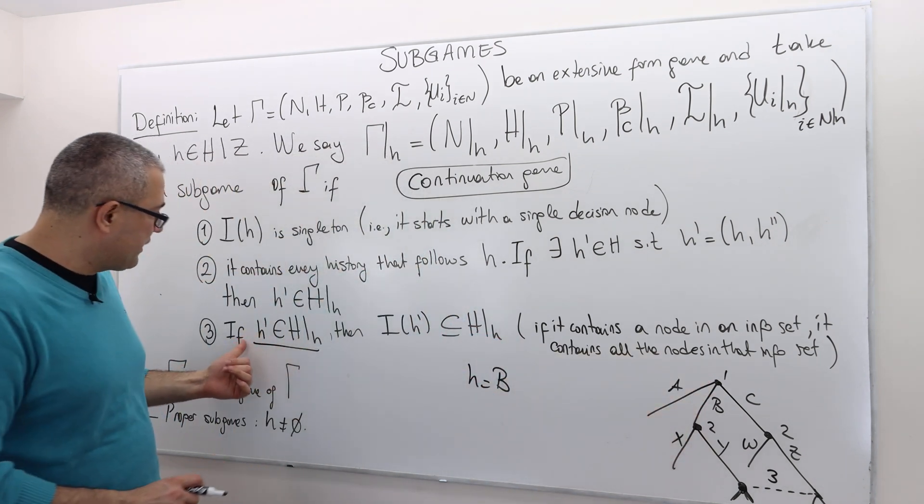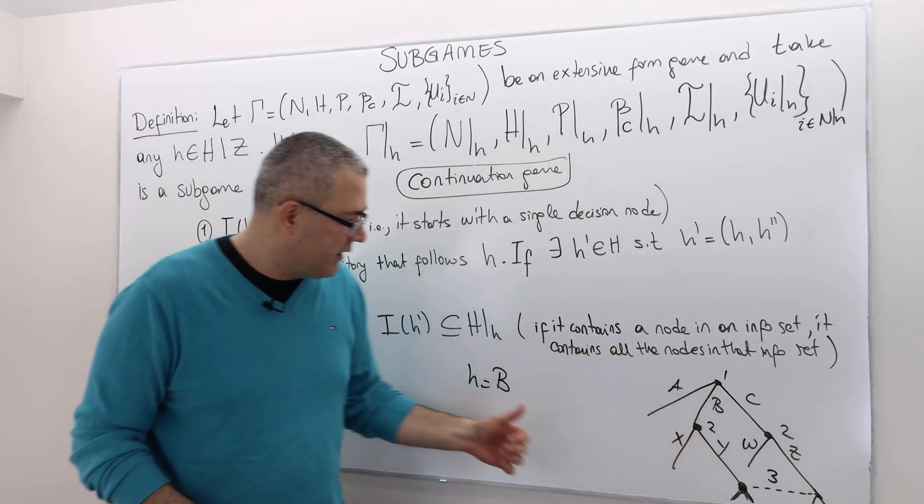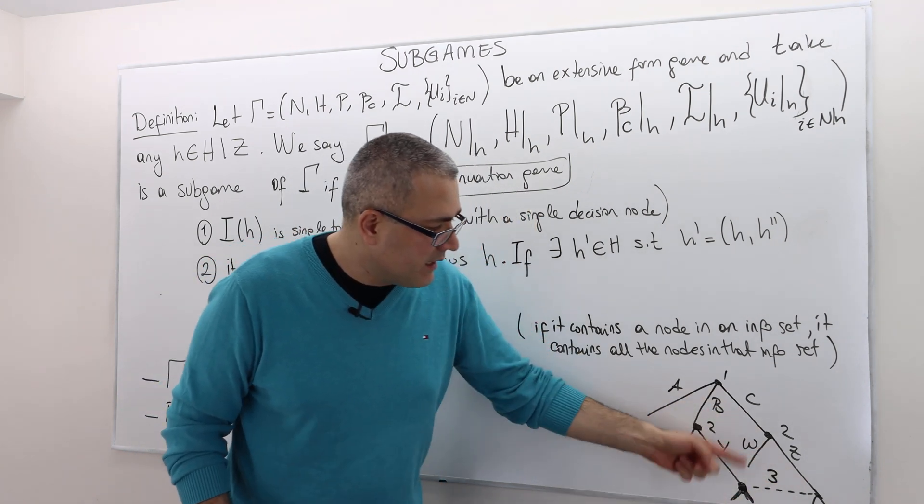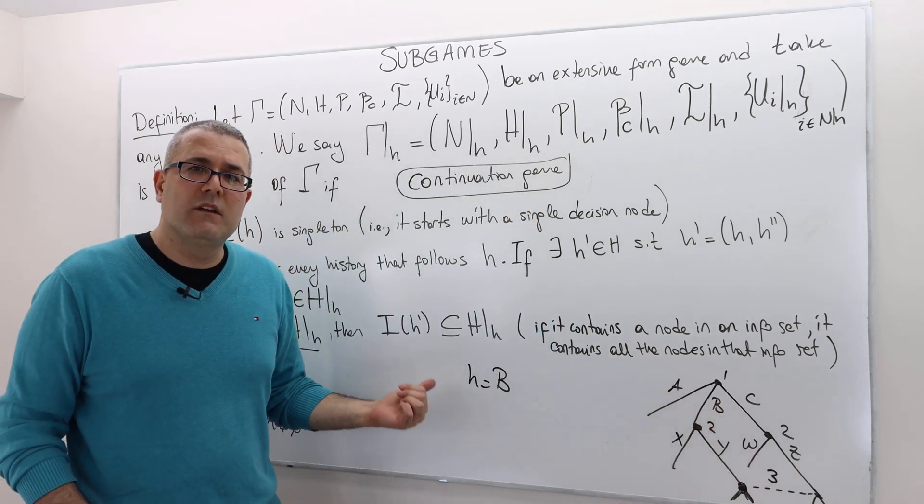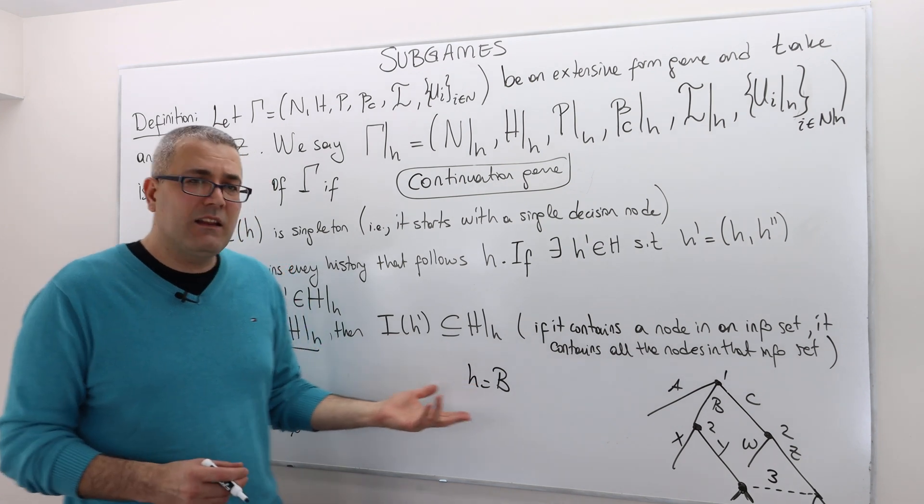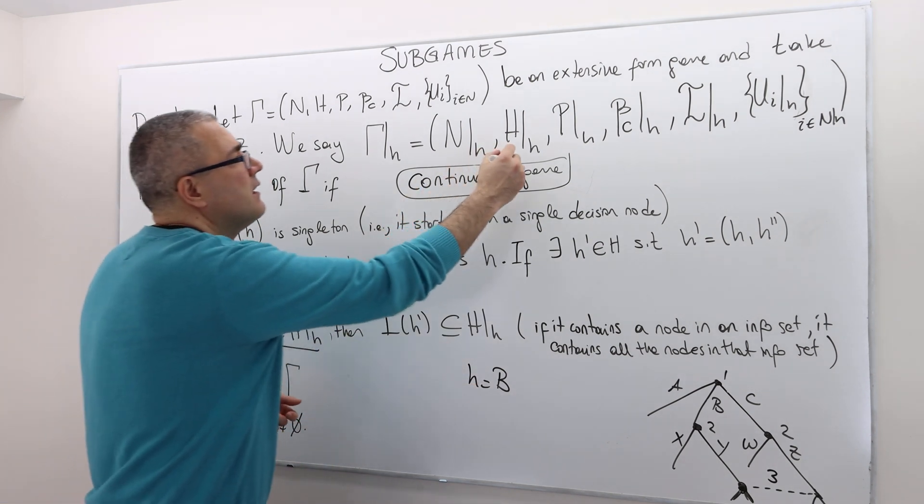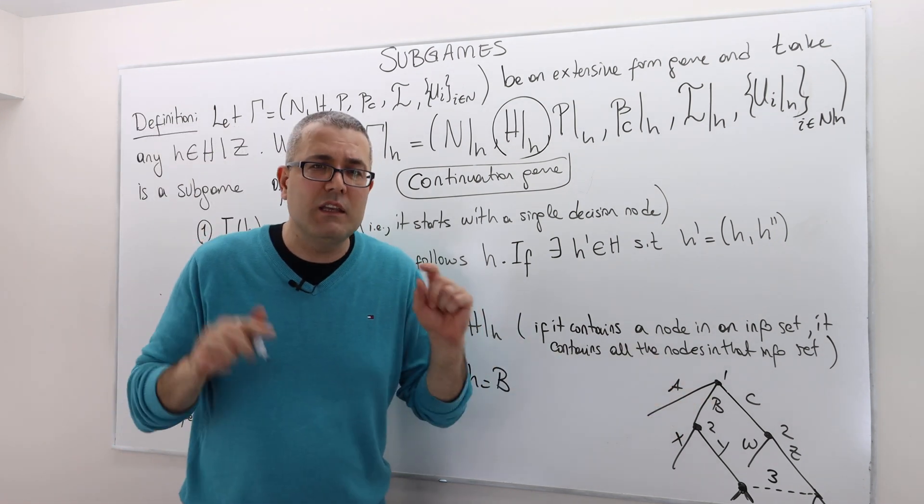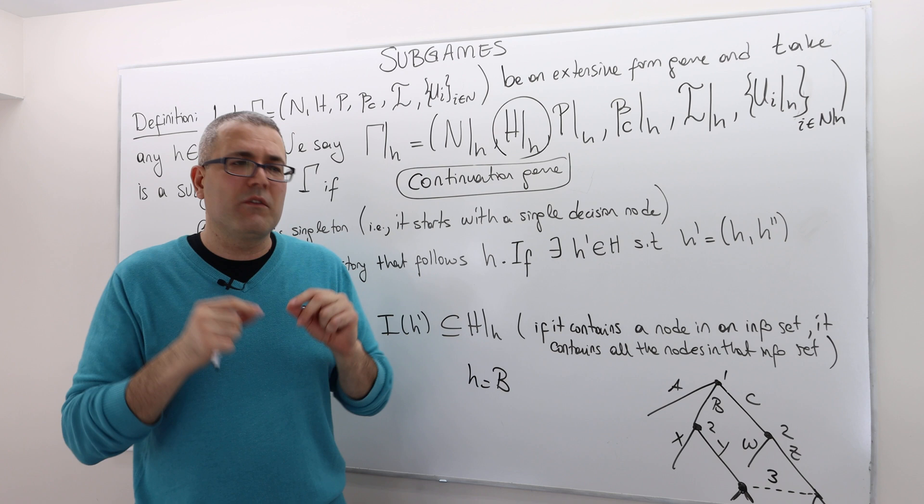But it can't be because C-Z is not in the set because it does not follow B, history B. You see what I mean? So therefore, you cannot create a subgame after a history B.